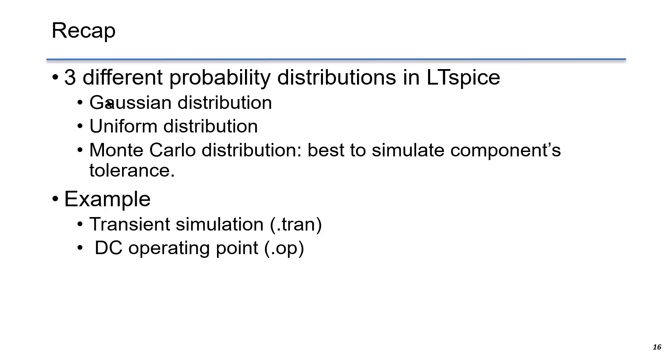Two examples are given here. The first one, we use transient simulation to find the output from each distribution in time domain. The second example, we use .op to find the DC operating point of each voltage, which makes the simulation much easier.